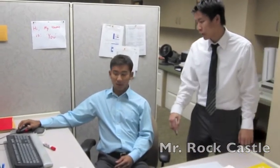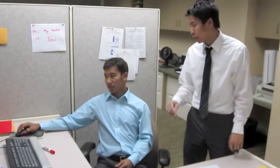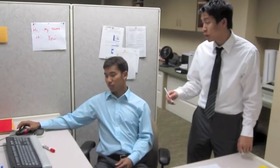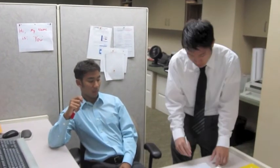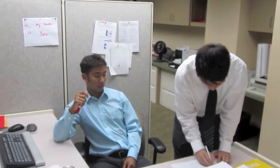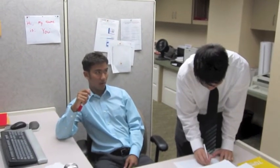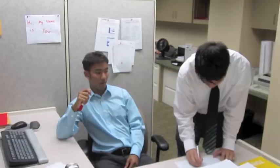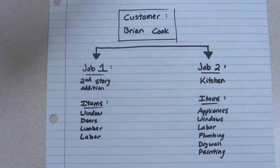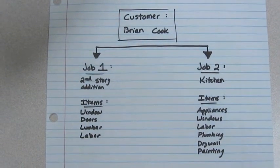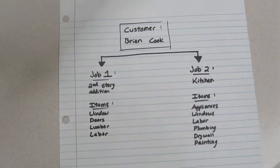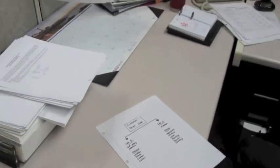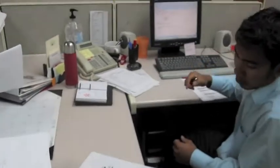While cash flow is crucial to our survival, we need to keep an eye on profits. We need to make sure we charge our customers enough so that we cover our costs and make a profit. We track the cost of each job we work on. In QuickBooks, we use items to track the products and services we use on each project.